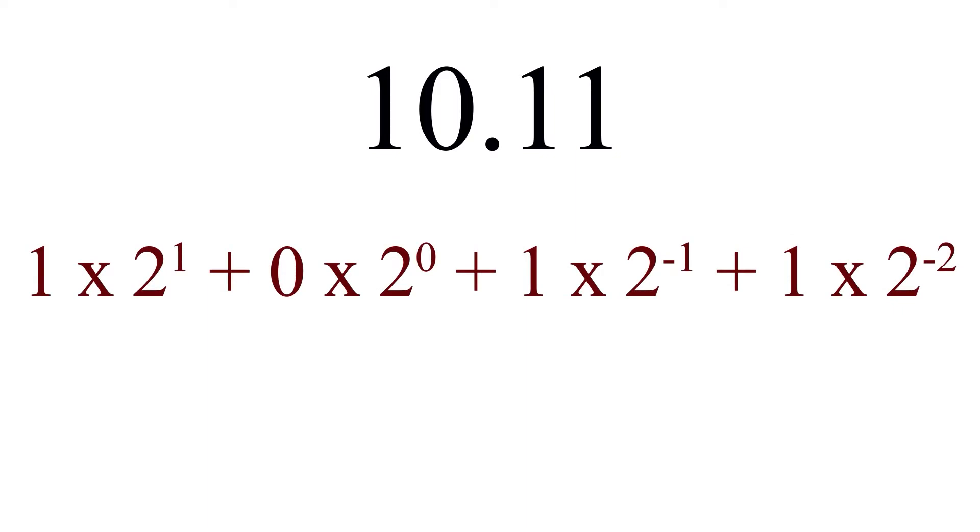So 10.11 in decimal form is found by using the expanded form: 1 times 2 to the 1st power plus 0 times 2 to the 0 power plus 1 times 2 to the negative 1 power plus 1 times 2 to the negative 2 power. Remember that a negative exponent means taking the reciprocal of the number, so 2 to the negative 1st is 1 half and 2 to the negative 2 is 1 over 2 squared, which is 1 fourth. So the decimal number represented by the binary number 10.11 is 2 plus 1 half plus 1 fourth, which is 2.75.